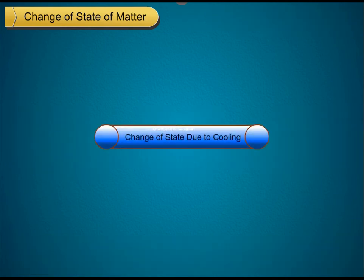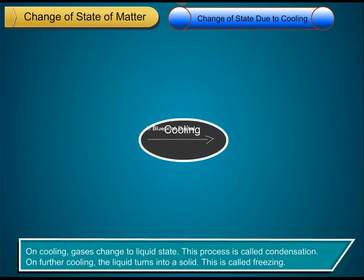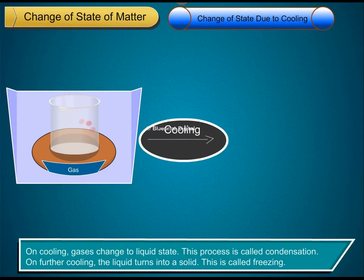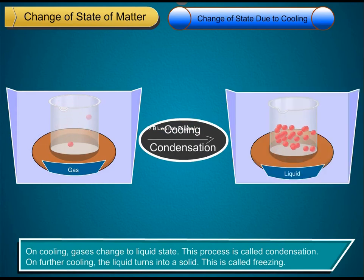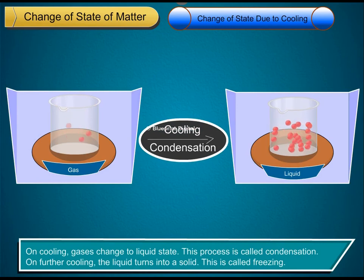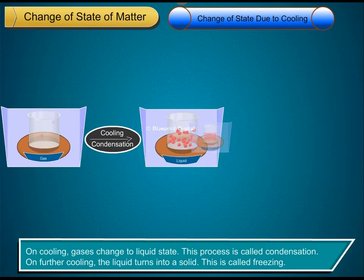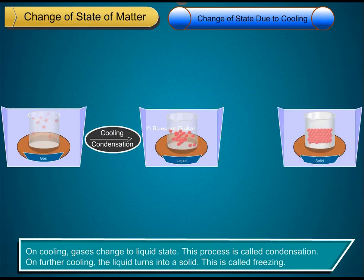Change of state due to cooling. On cooling, gases change to liquid state. This process is called condensation. On further cooling, the liquid turns into a solid. This is called freezing.